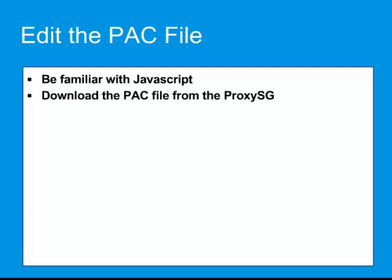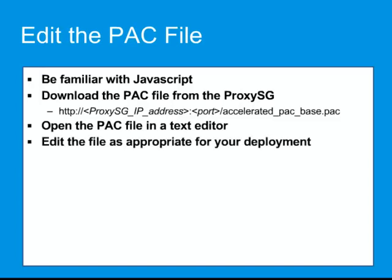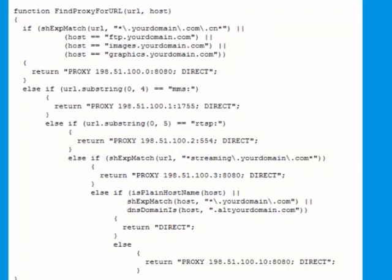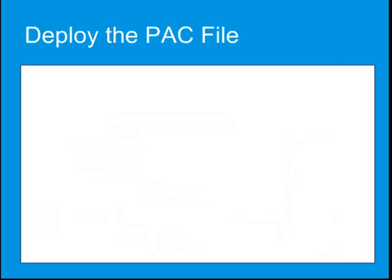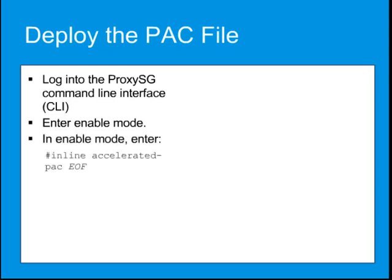Download the PAC file from the appliance. Open the PAC file in a text editor such as Notepad, and edit the file as appropriate for your deployment. If you are setting up the network for explicit proxy for the first time, it's a good idea to create a relatively simple PAC file for testing. To deploy the PAC file, log into the ProxySG command line interface and enter Enable mode. Paste the PAC file contents copied from the text editor inside the PAC file contents bracket. EOF is an end-of-file marker — choose one that does not match any string in the PAC file itself. The CLI responds OK.